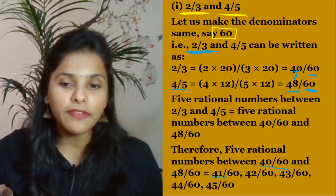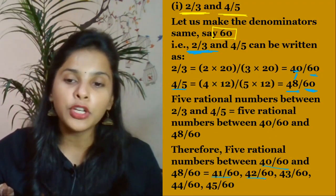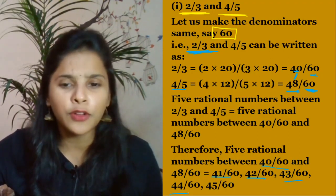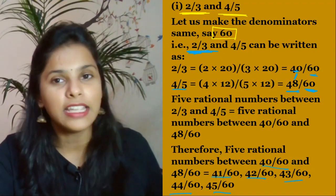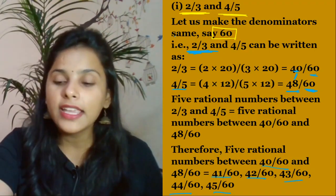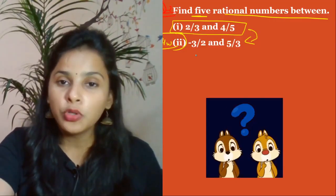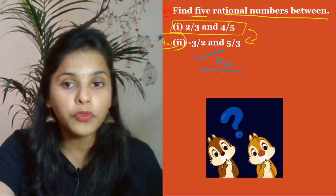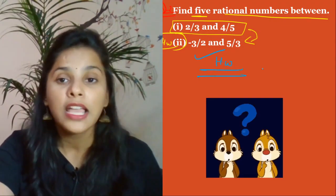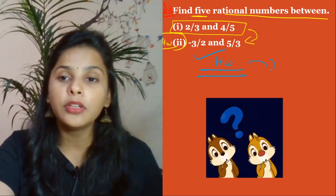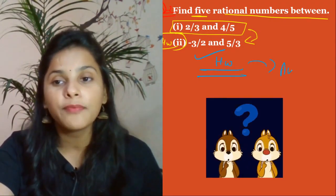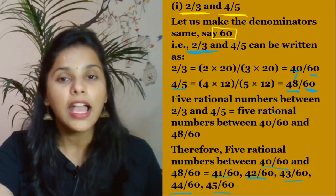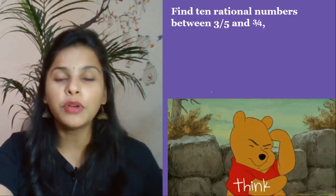The five rational numbers between 40/60 and 48/60 are: 41/60, 42/60, 43/60, 44/60, and 45/60. Similarly, boom Part 2 as your homework — don't forget! Let me know the answer in the comment section. I am waiting for your answer.